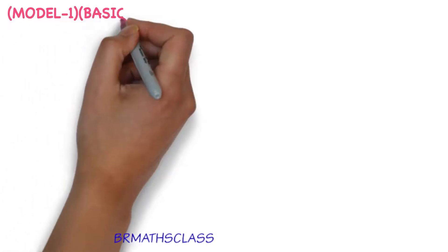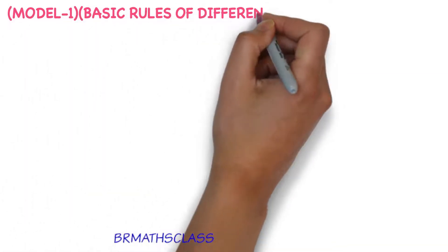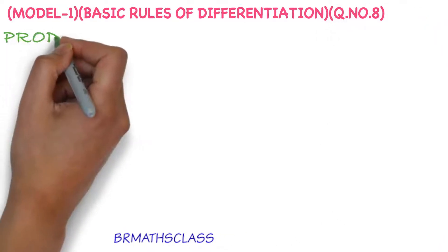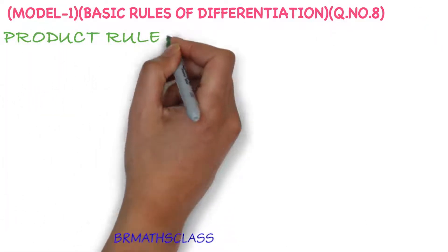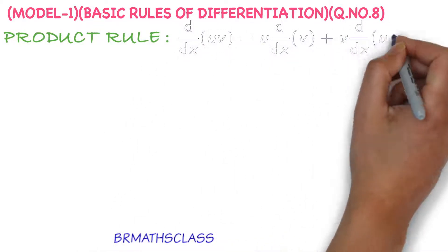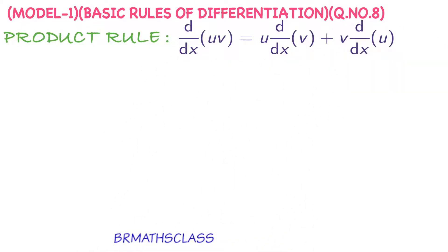Model 1, Basic Rules of Differentiation, Question number 8: Product Rule. Very important formula. This product rule we use very frequently throughout this differentiation chapter.